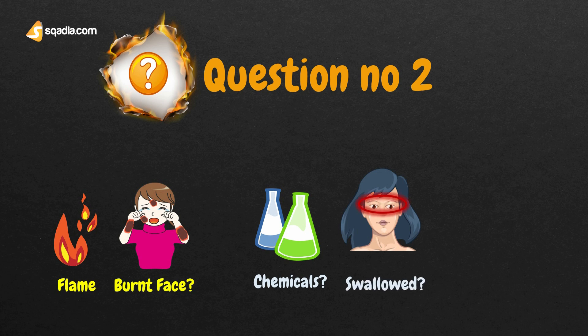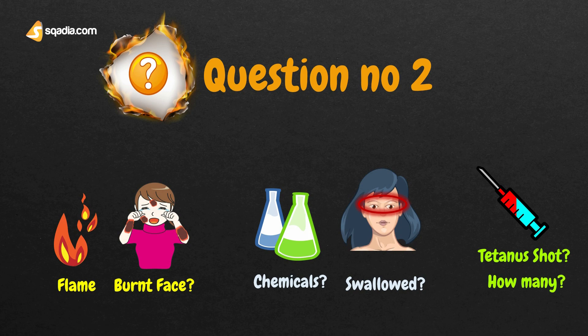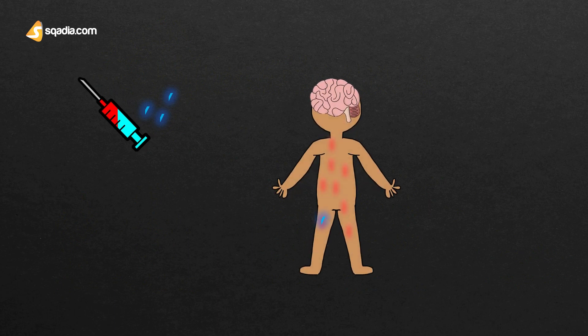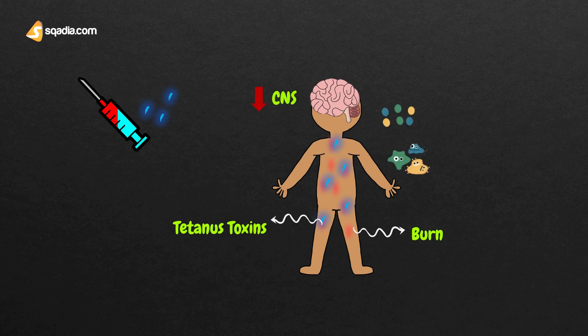You also need to ask them when they had their last tetanus shot, and how many tetanus shots they have received in their life. The reason for asking this is that tetanus toxin might enter the body through a wound or burn. Once in the body, the bacteria release poisons that attack the body's nervous system. So, to prevent lockjaw, a history of tetanus shots is established.